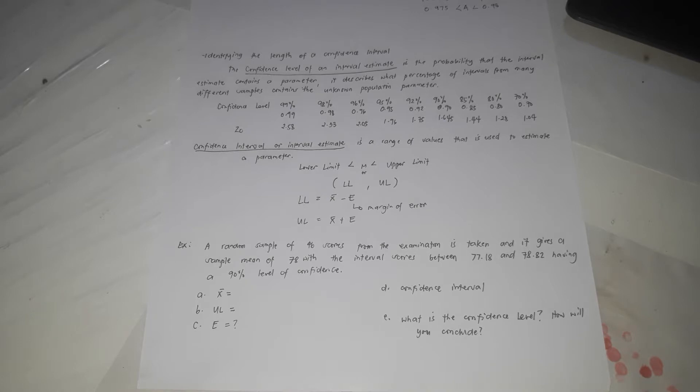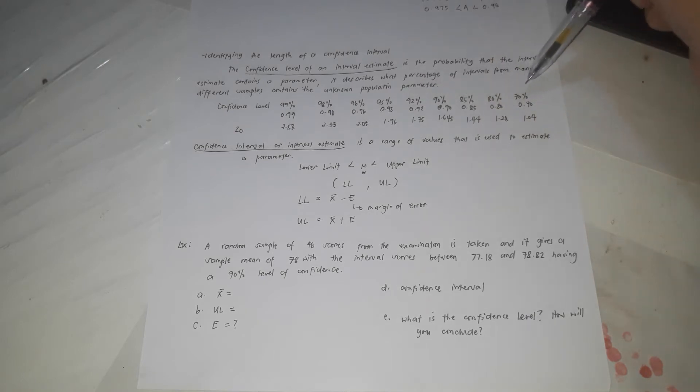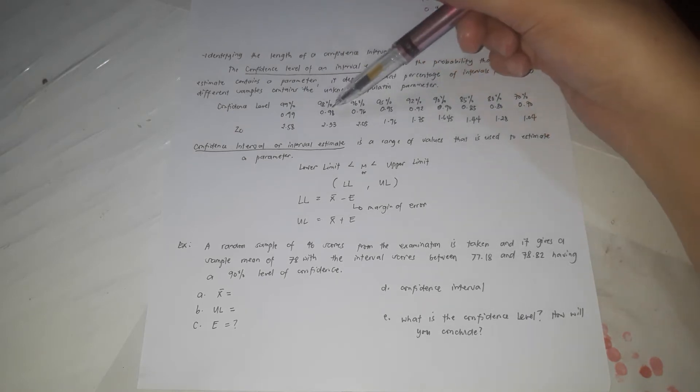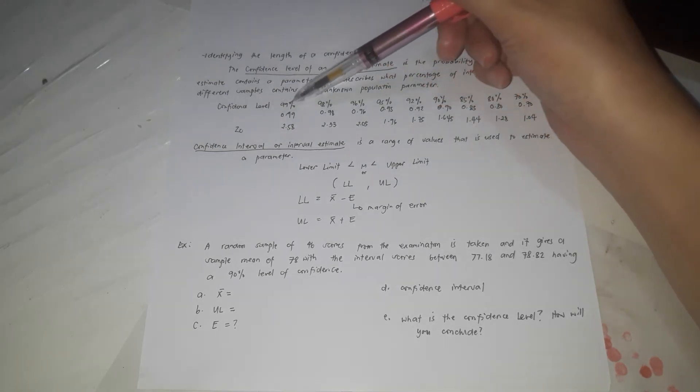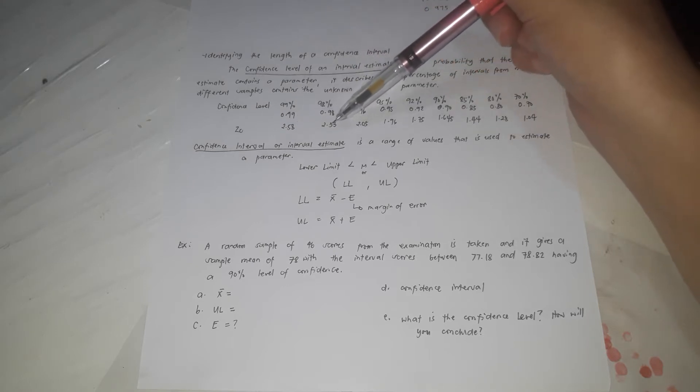There are different confidence levels. If you are testing a hypothesis, you need a confidence level or the margin of error. The confidence levels are usually 99%, 98%, 96%, 95%, 92%, 90%, 85%, 80%, and 70% — or in decimal form: 0.99, 0.98, 0.96, 0.95, and so on. The Z-scores for these confidence levels are: for 99% it is 2.58, for 98% it is 2.33, for 96% it is 2.05, and so on. Those are the Z-critical values.